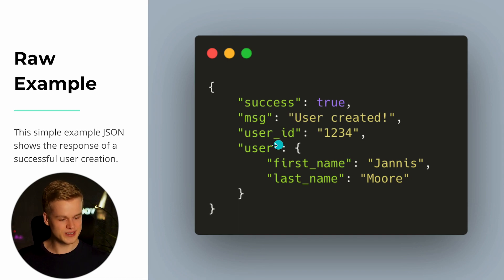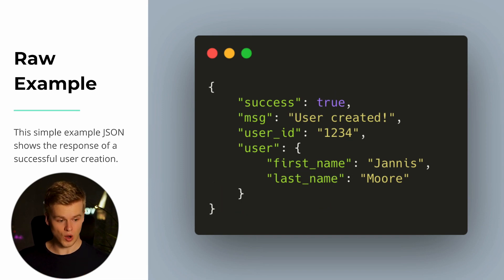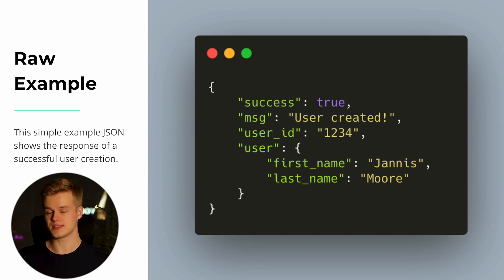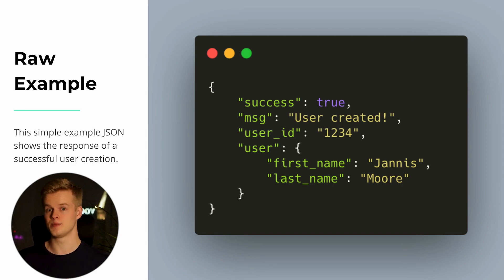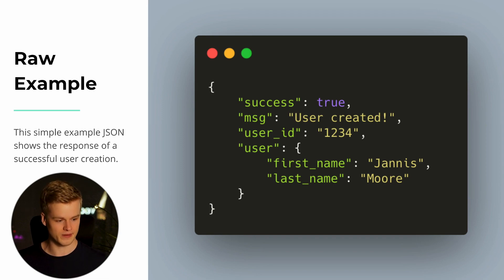Lastly, you see a 'user' key that contains another sub-JSON including first name and last name. This basic structure is what you see in a lot of requests. Not all endpoints use this exact structure since everyone uses different notations, but knowing a structure like this helps you debug things and get a better understanding of what JSON is.